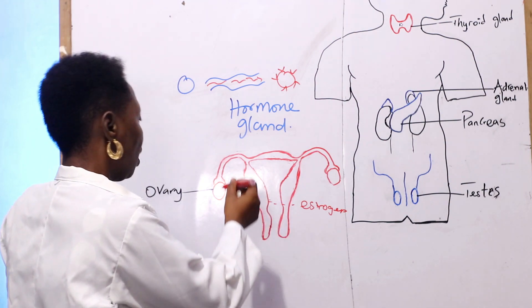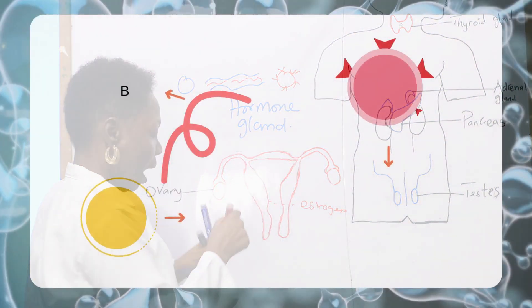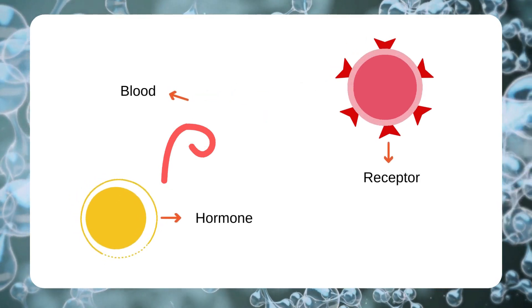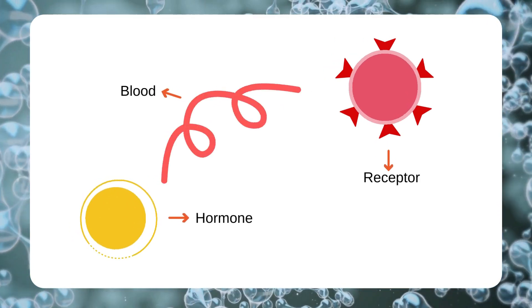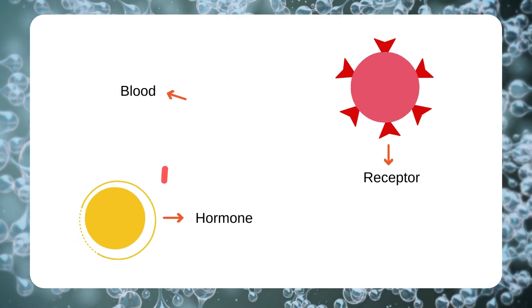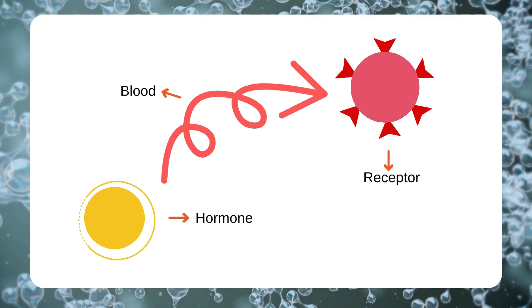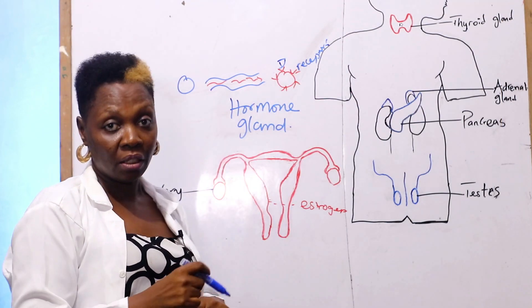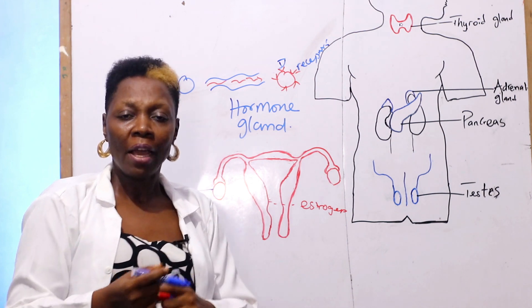Why are they target specific? Because the hormones have receptors that they recognize and bind to, and they exert their effects in the target tissue.